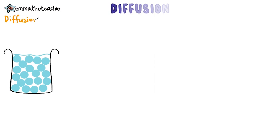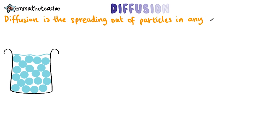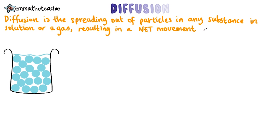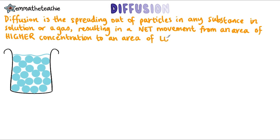Let's start with a definition. Diffusion is the spreading out of particles of any substance in solution — i.e. a liquid or a gas — resulting in a net movement, which just means overall movement, from an area of higher concentration to an area of lower concentration.